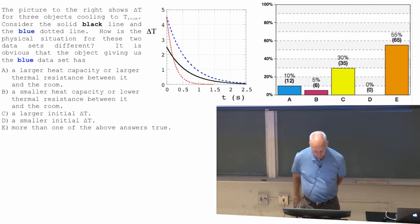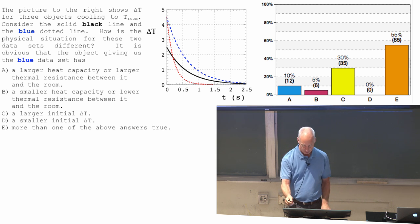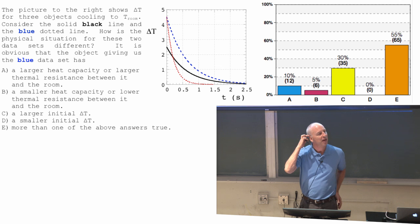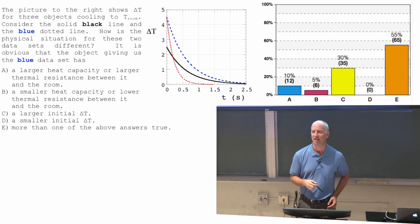So let's think about this. Larger heat capacity, let's suppose there's a larger thermal resistance. If there's a larger thermal resistance, what's gonna happen, what does this curve look like? Let's say blue has a larger thermal resistance. What does that tell you about the time dependence? Maybe I'll ask it this way. What does that tell you about the half life?